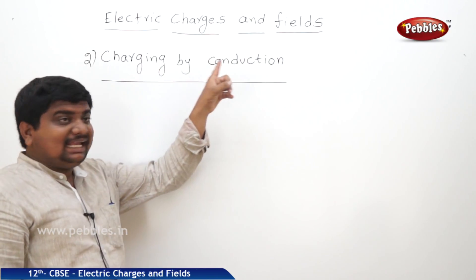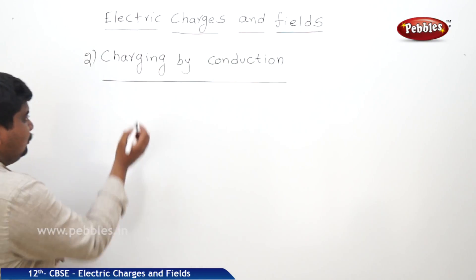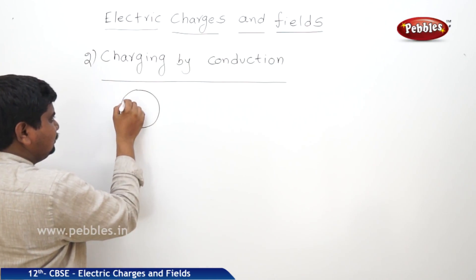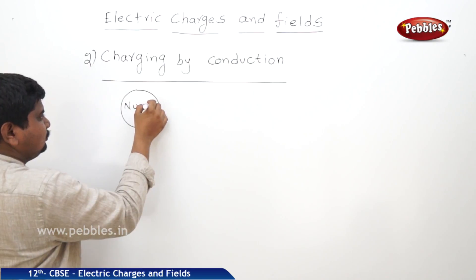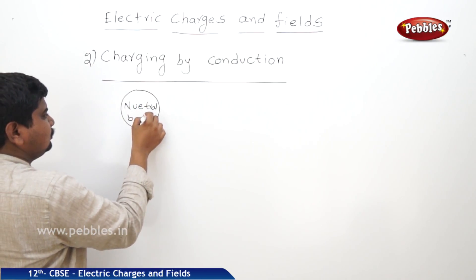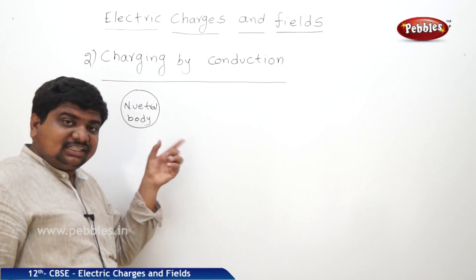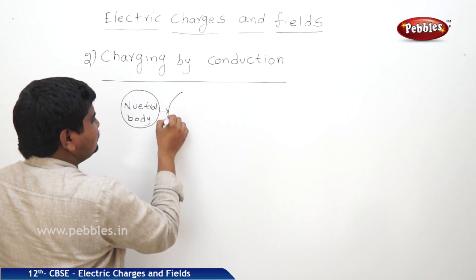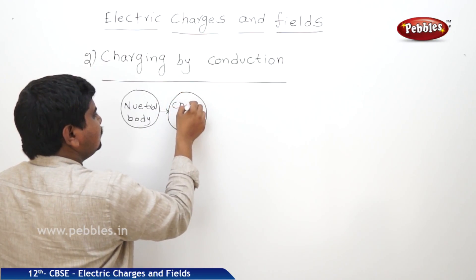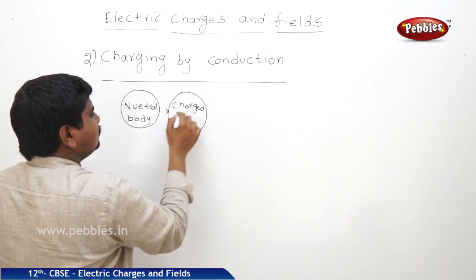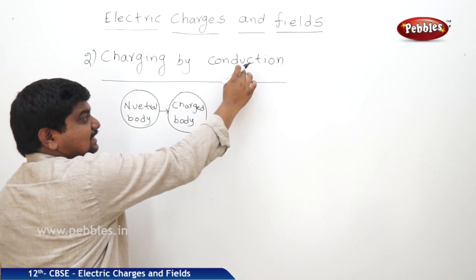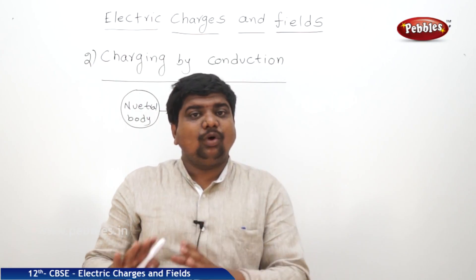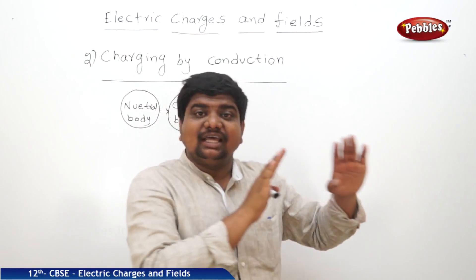Next process: charging by conduction. What is the meaning of charging by conduction? A neutral body needs to be charged, so we place this neutral body in contact with the charged body. Conduction means the flow of electrons from source to receiver.